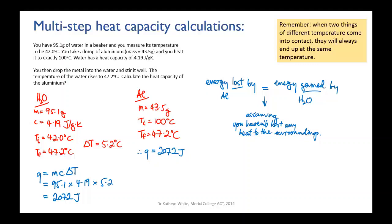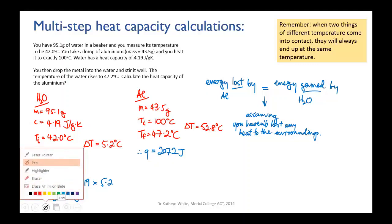Since we now know the mass of the aluminum, ΔT - we should work that out - ΔT for the aluminum equals 100 minus 47.2 which is 52.8 degrees Celsius. So we now know the mass and ΔT and Q, and that means that we can calculate the heat capacity for aluminum.